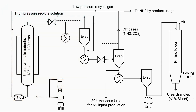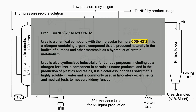First of all, we will know what is urea. Urea is a chemical compound with the molecular formula CO(NH2)2. It is a nitrogen-containing organic compound that is produced naturally in the bodies of humans and other mammals as a byproduct of protein metabolism. Urea is also synthesized industrially, including as a nitrogen fertilizer.